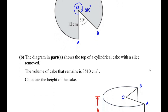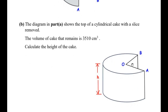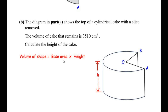In part b, the diagram from part a represents the top of a cylindrical cake with a slice removed. Drawing a rough figure, the same shape now forms a cylinder. The part AOB represents the slice cut from the cake, and the remaining volume is 3510 cubic centimeters. We need to find the height of this cylinder.